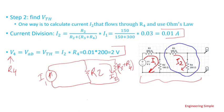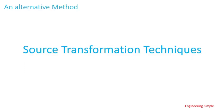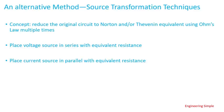So that is one way — using Ohm's law and current division to find the Thevenin voltage and Thevenin resistance. Another method is to use source transformation techniques, and we'll find the same results. The concept is to reduce the original circuit to Norton or Thevenin equivalent using Ohm's law multiple times. Each time you make a transformation: if it's a voltage source, put it in series with the equivalent resistance; if it's a current source, put it in parallel with the equivalent resistance.